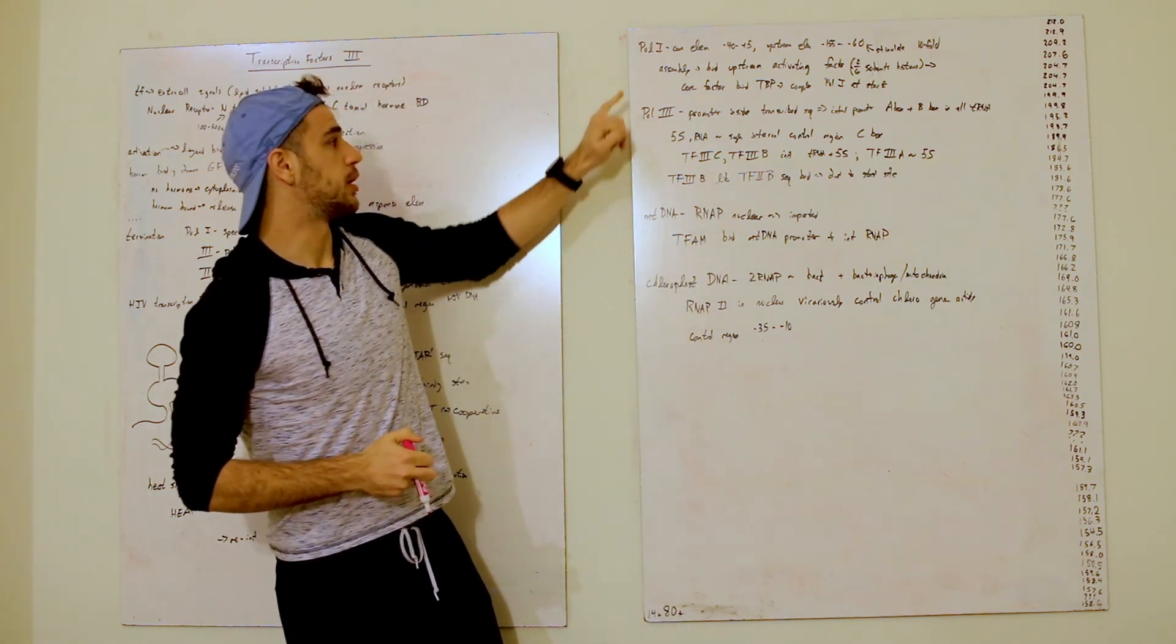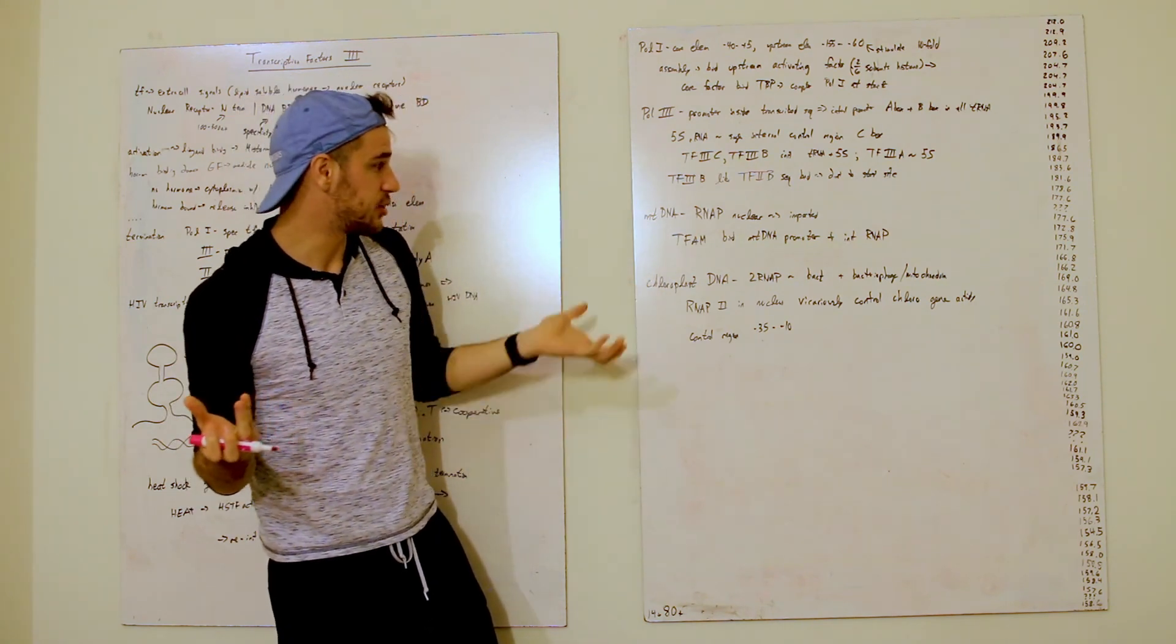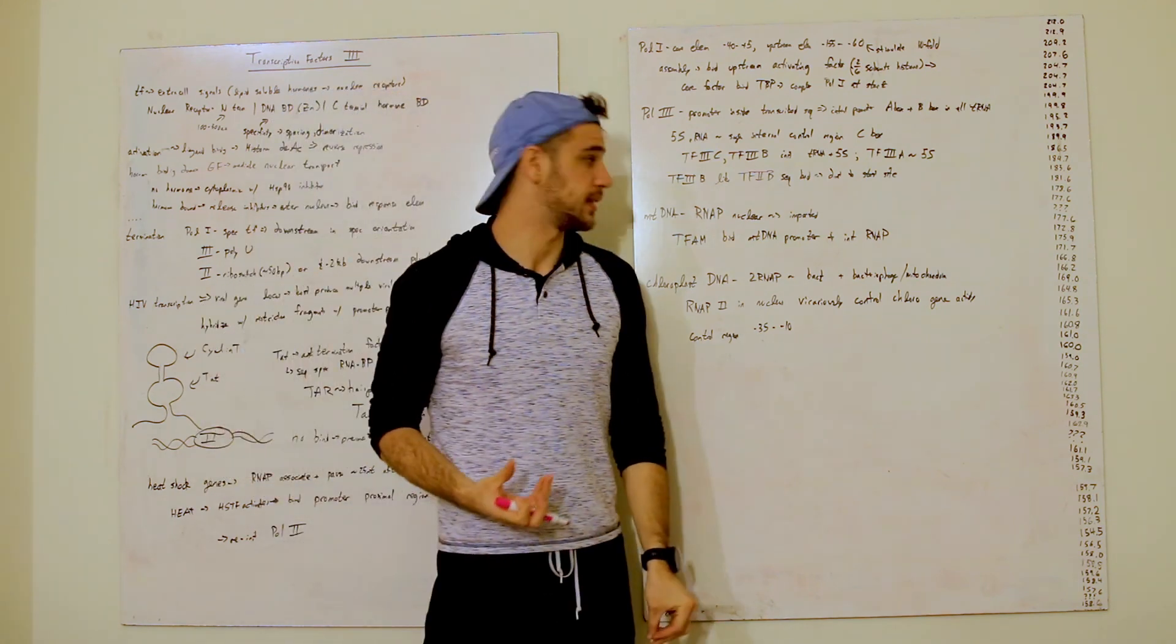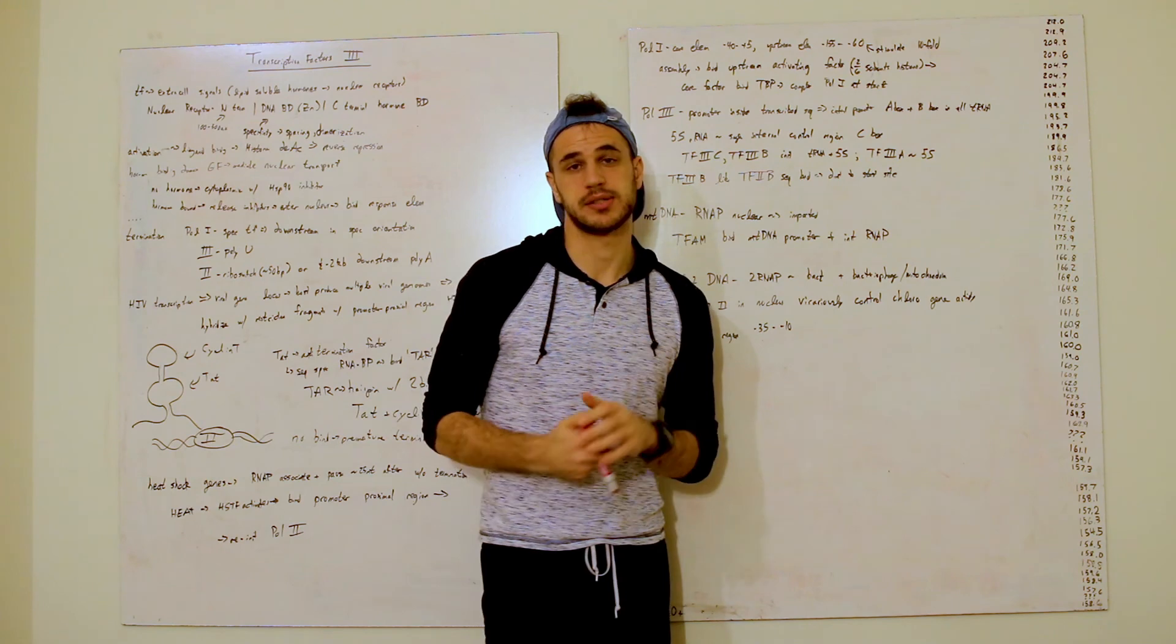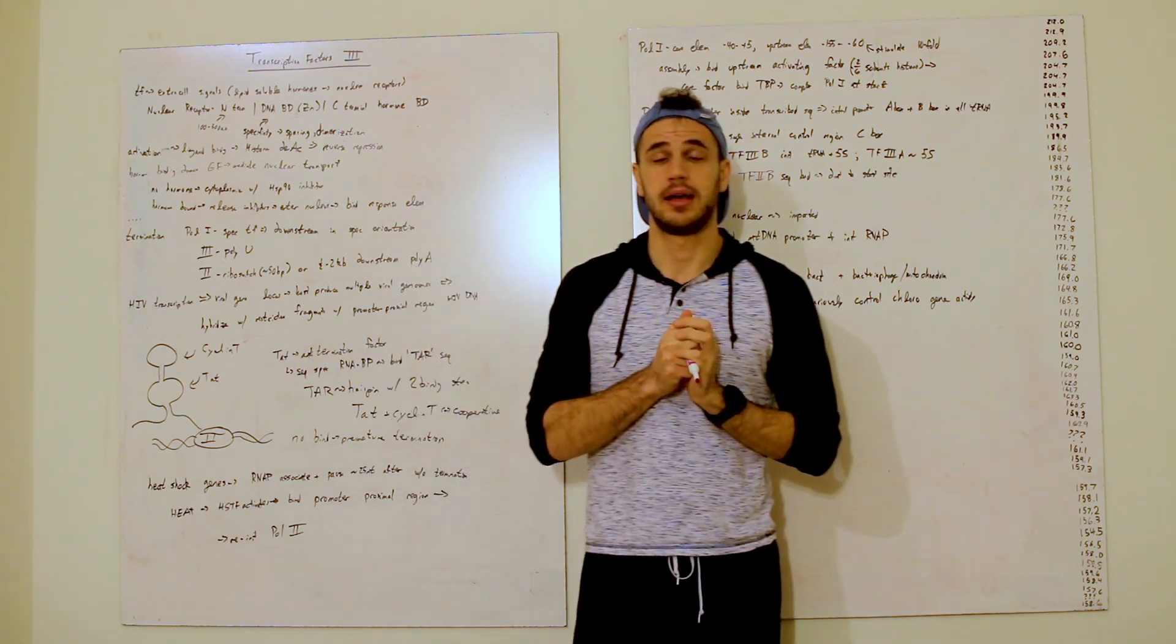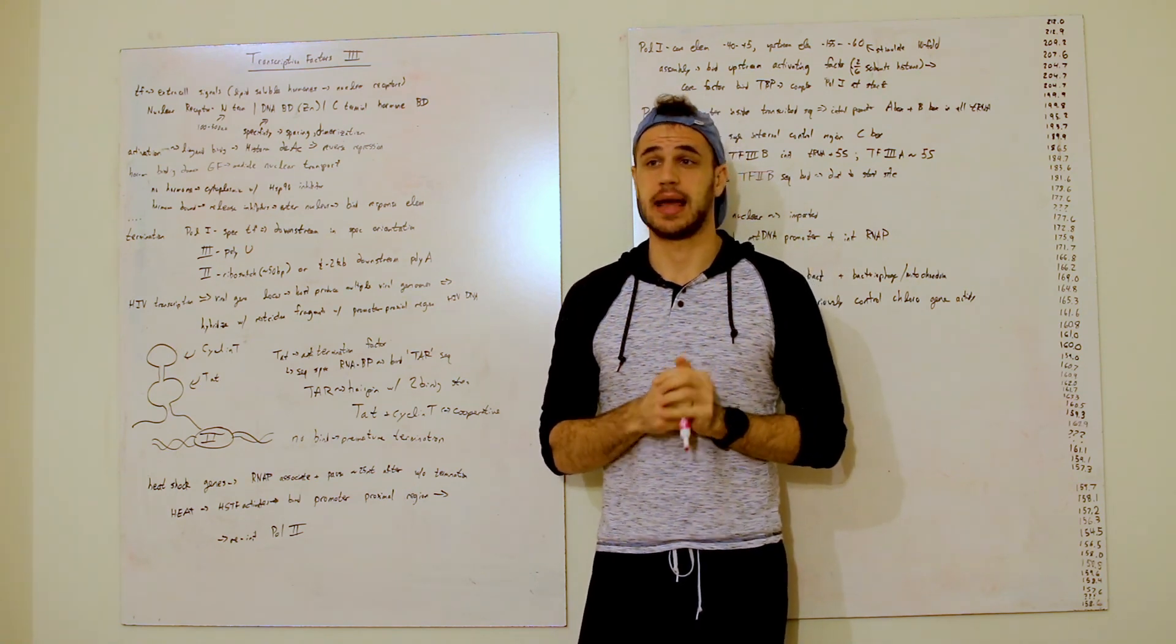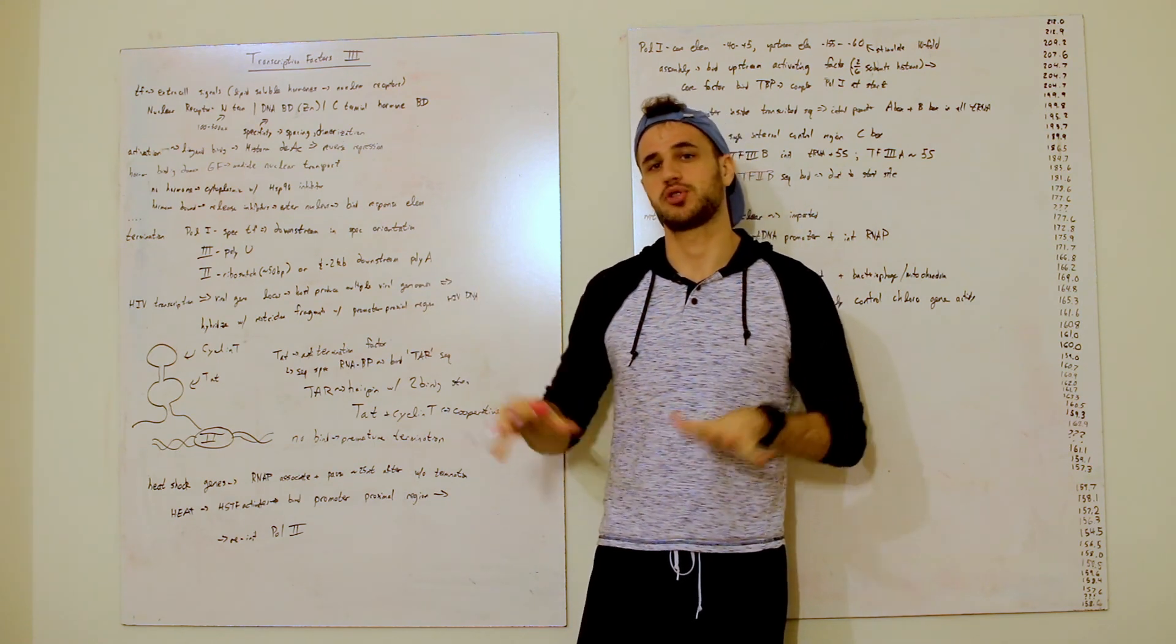Then we've got polymerase 1 and 3 that have some fancy little unique stuff that bind the initiations, as well as some fancy stuff with mitochondrial and chloroplast DNA that are unique because you have to import these RNA polymerases. So, that is it for transcription factors. We know we can talk about more different gene regulation techniques that are not done at the transcription factor level, but rather post-transcription.